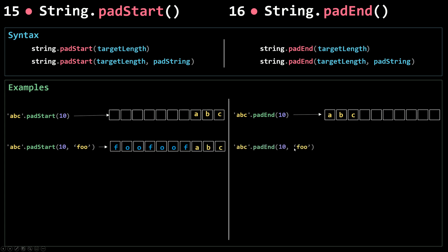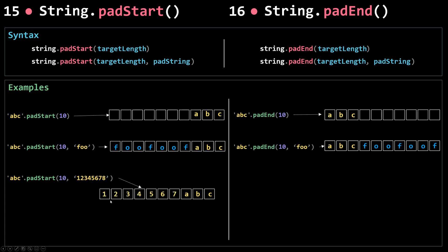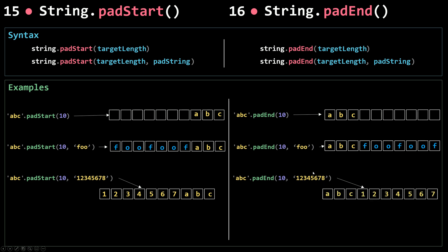The same thing goes for padEnd — I'll use the same arguments, but this time it will be padded from the end. Now let's look at an example where I pass in a long pad string. If my original string were padded with this long string, it would go over the target length. In that case, padStart will truncate the pad string so that padding 'abc' reaches exactly the target length of 10 — so we only pad with 7 characters, not all 8. The same applies for padEnd; it also truncates the pad string to reach the exact target length.